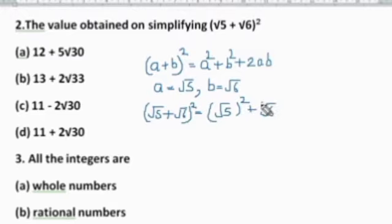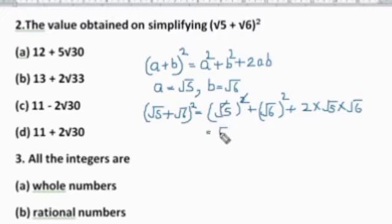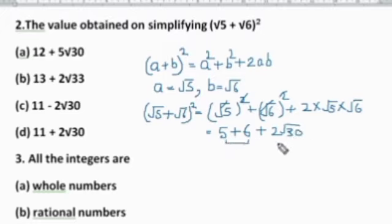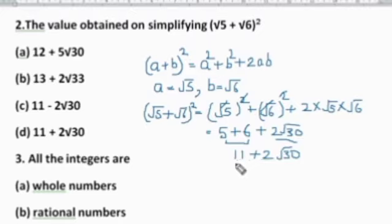Using the formula (a+b)² = a² + 2ab + b², here a = √5 and b = √6. The square and square root cancel each other — √6 squared gives 6, and √5 squared gives 5. Then 2ab gives 2 × √5 × √6 = 2√30. So 5 + 6 = 11, and the full answer is 11 + 2√30. The two terms 11 and 2√30 are unlike terms and cannot be added further. Checking which option matches — Option D is the right answer.